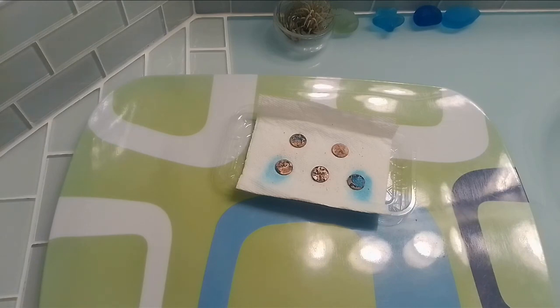So here you can see how the environment, which was the vinegar and the salt and the air around it, affected the surface of the copper pennies. Which is exactly how the Statue of Liberty came to be green.